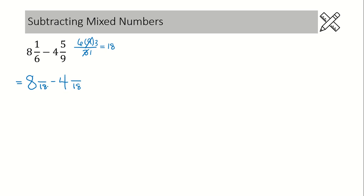Next we want to make equivalent fractions. Compare the denominators: we're going from a 6 to an 18, so we're multiplying by 3 — 1 times 3 is 3. Here we're going from 9 to 18, so we're multiplying by 2 — 5 times 2 is 10. Now that we have common denominators, we can subtract, but we have one problem.